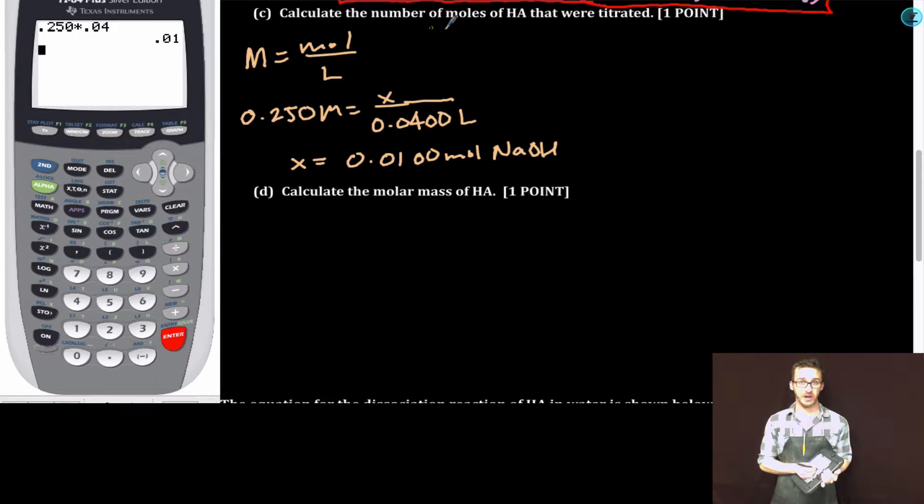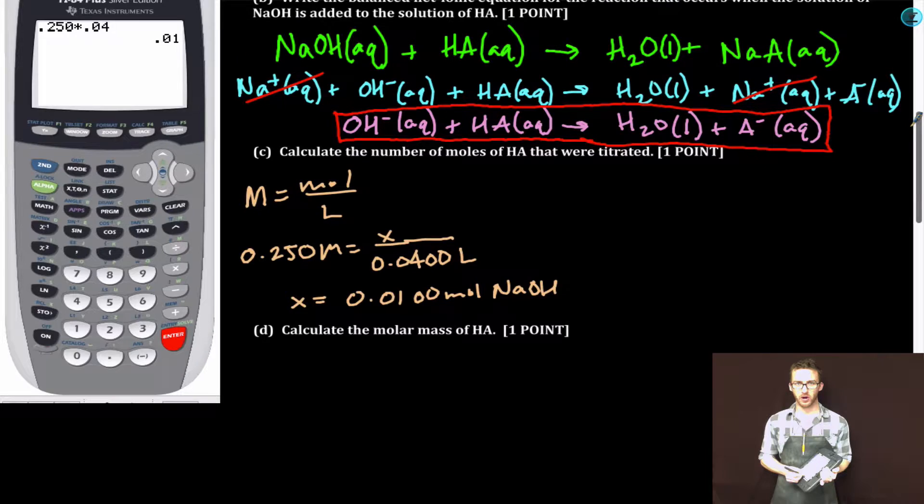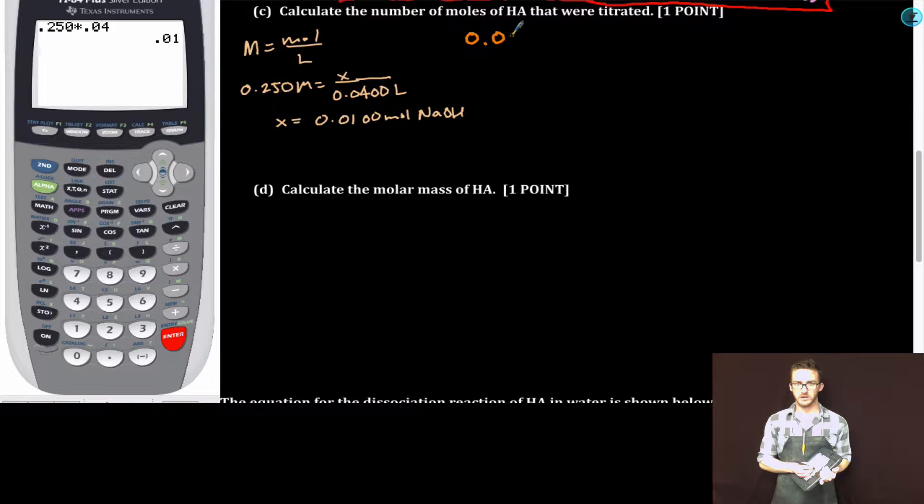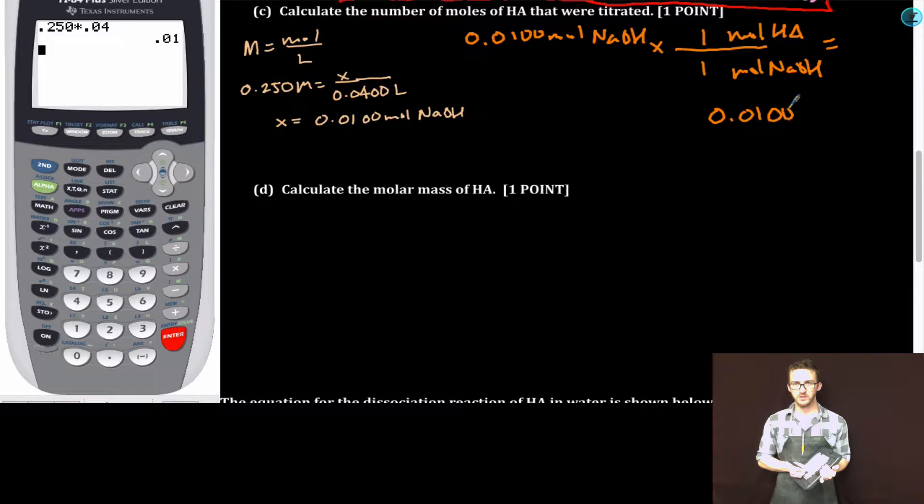Now the question is asking us for the number of moles of HA. So think about that equation that you just wrote up in part B. Realize that the ratio is a 1 to 1 ratio between the hydroxide ion and HA, or 1 to 1 between sodium hydroxide and HA. 0.0100 moles sodium hydroxide. Show this stoichiometry. So I've got 0.0100 moles HA that were titrated. Again, boxing it in for clarity.